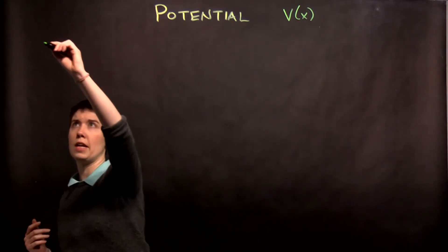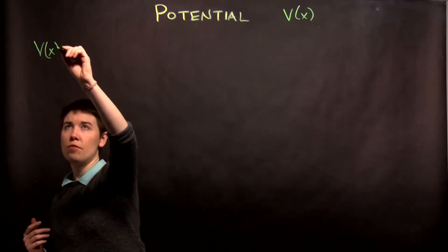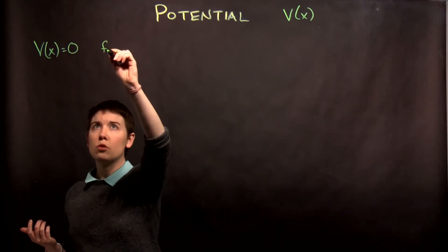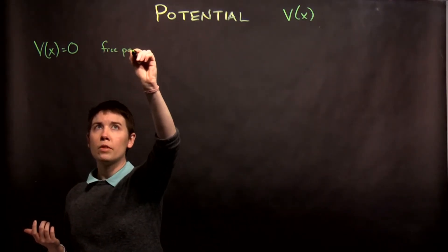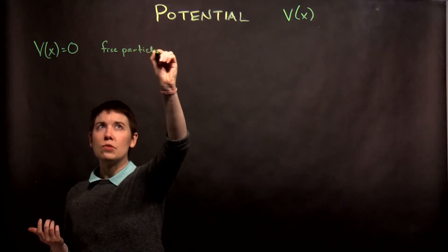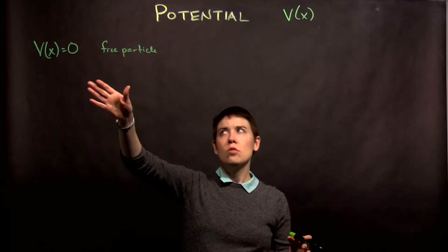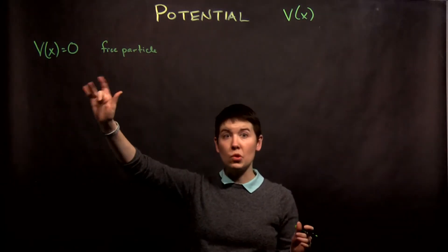So the simplest thing we can have is that V(x) equals zero for all x, and this is going to correspond to a free particle. Now the caveat is that this is actually going to be kind of a special case to calculate, so we're not necessarily going to start with that.